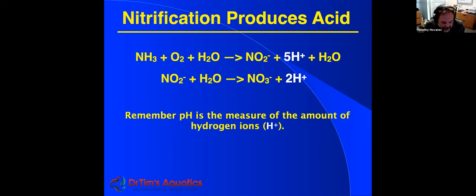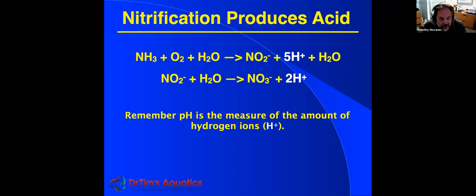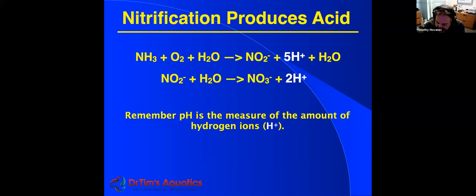These equations show why everything is interconnected. As ammonia is converted to nitrite, and nitrite to nitrate, hydrogen ions are produced. More hydrogen ions means lower pH. You can't stop this — if you're feeding fish, you're naturally producing acids that will initially be buffered by your alkalinity. Once all the alkalinity is consumed, the continued nitrification causes your pH to drop, potentially down to five or below, where fish cannot survive. This is old tank syndrome.